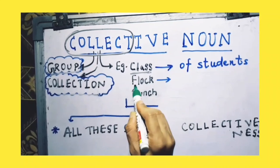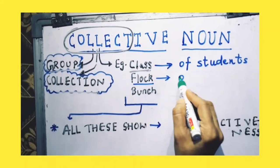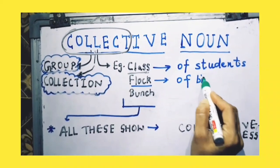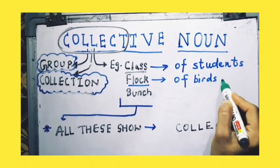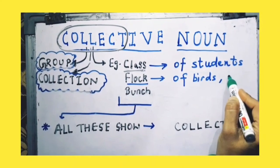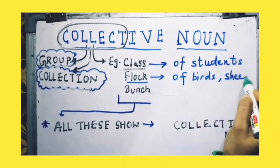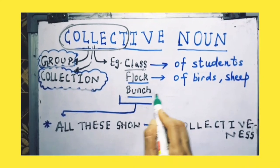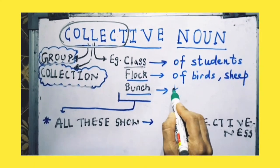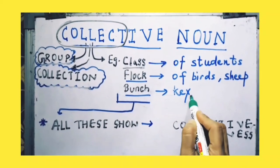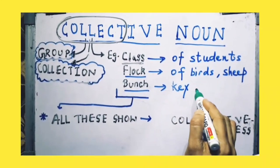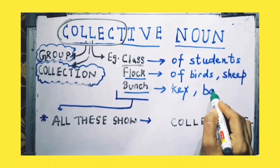Now flock. Flock of birds. It can be flock of sheep also. Next, bunch. Bunch can be of peas, or bunch can be of bananas.